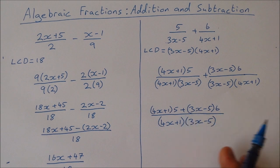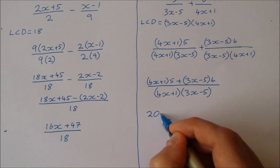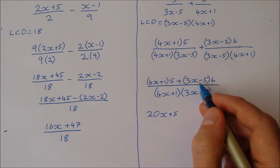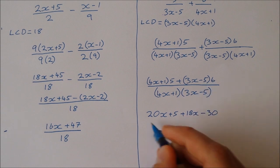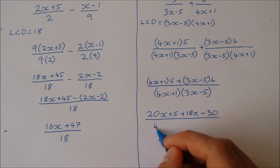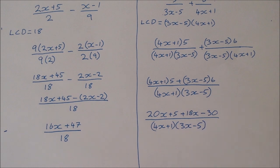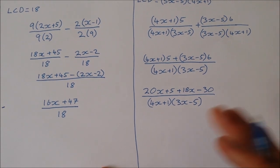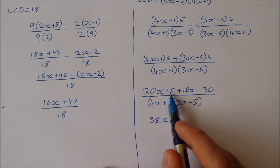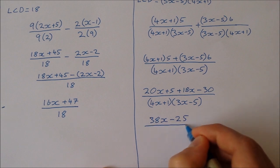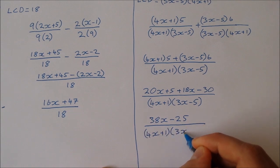Now it's just a matter of multiplying out the top line and simplifying. 4x times 5 gives 20x, 1 times 5 is 5, 3x times 6 is 18x, and minus 5 times 6 is minus 30. I'm not going to multiply out the denominator — we tend to leave it in factored form. Tidying up the top: 20x plus 18x is 38x, and 5 minus 30 is minus 25. So the answer is 38x minus 25 over (4x plus 1)(3x minus 5).